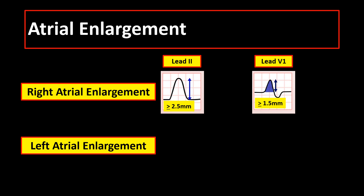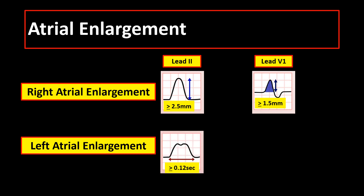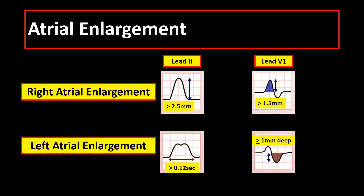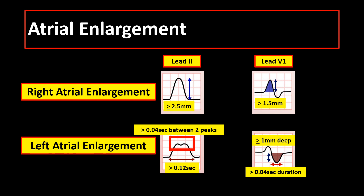In left atrial enlargement, there is P wave duration of at least 0.12 seconds or 3 small boxes in lead V2, or P wave terminal negative deflection of at least 1 mm or 1 small box deep and at least 0.04 seconds or 1 small box in duration. An additional P wave morphology of left atrial enlargement is bifid P wave in lead V2, with 2 peaks and a distance between the 2 peaks of at least 0.04 seconds or 1 small box.